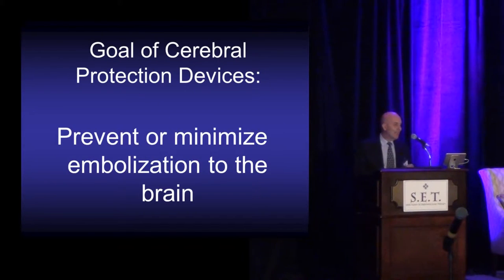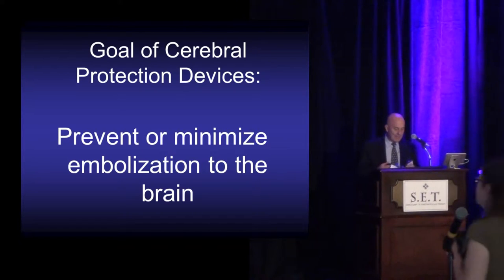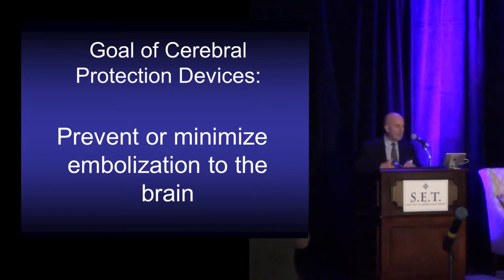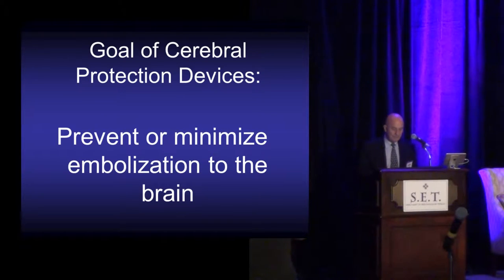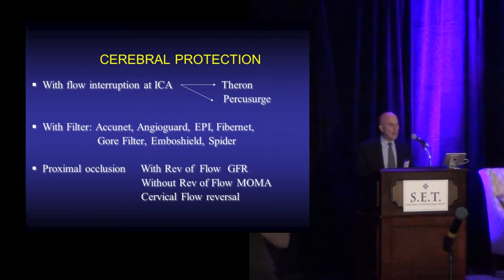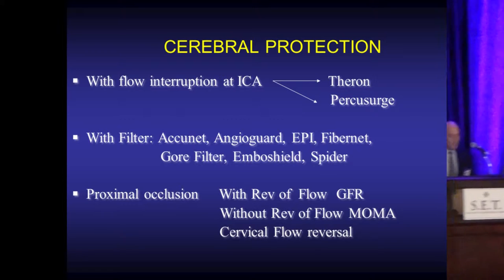As a reminder, the goal of cerebral protection devices is to prevent or minimize embolization to the brain during the procedure. There are different ways to protect the brain during carotid artery stenting from both macro and micro embolization points of view.